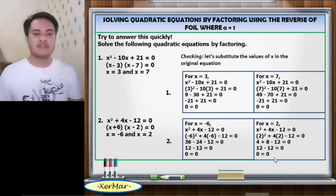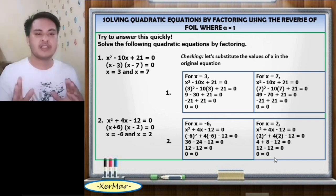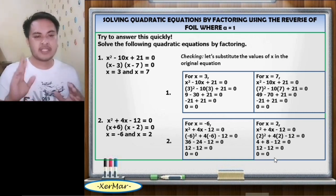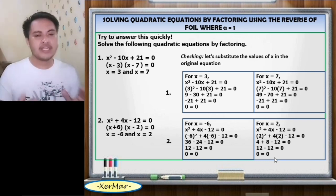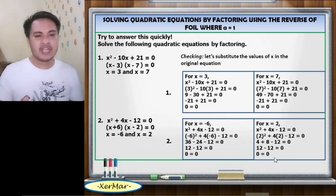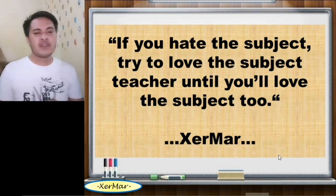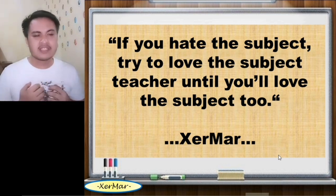So guys, this is the end of our lesson on solving quadratic equations by factoring using the reverse of FOIL where a equals 1. Since this is just Part 1, expect Part 2 wherein the leading coefficient is greater than 1. And before I end, let me share this: if you hate the subject, try to love the subject teacher until you love the subject too.